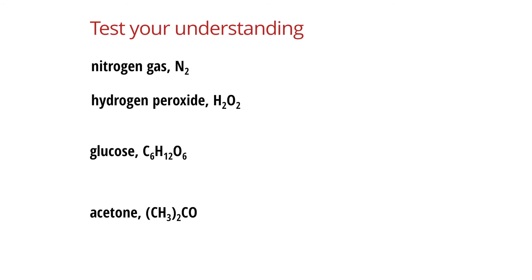Now let's check our understanding again. For each of these examples, can you identify the number and type of each atom present? Pause the video and try that, then we'll go through the answers. For nitrogen, N2 means there are two nitrogen atoms in a molecule. This is an element because it is only made up of nitrogen atoms — one type of atom.